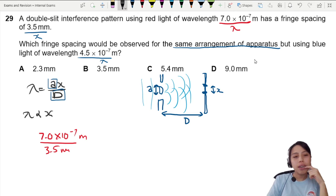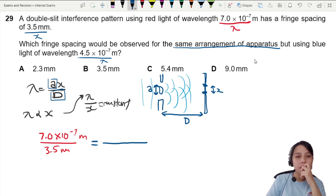By the way, what I'm doing here is from this I can conclude that λ/x is constant, so whatever ratio I get here should be equal to when I use blue light. Blue light, the wavelength is different, so 4.5×10^-7.